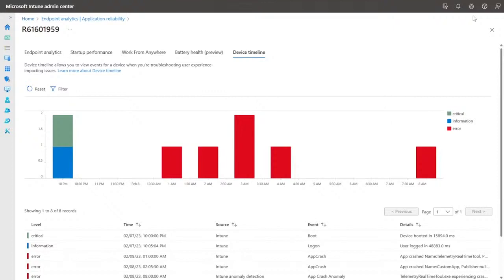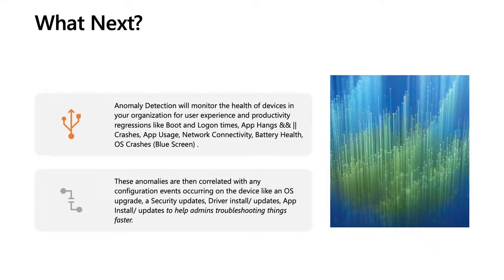This is a very important step, helping IT admins understand what's going on with the device and how to troubleshoot and remediate in a timely manner. Troubleshooting has never been easier. Now that we've seen how anomaly detection and device timeline work together seamlessly, we want to understand what's next. Anomaly detection will monitor the health of devices for user experience, productivity, and regressions. We also plan on adding more signals like network connectivity, battery health, policy-related information, and device compliance insights. These anomalies will be correlated with important configuration events in the context of an OS upgrade, a security update, driver install, or an app installer update — helping admins troubleshoot things at a much faster pace.